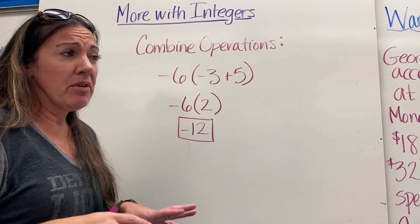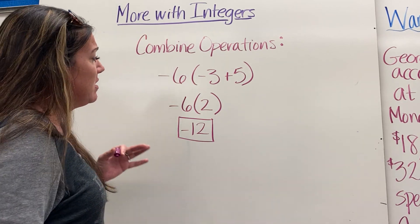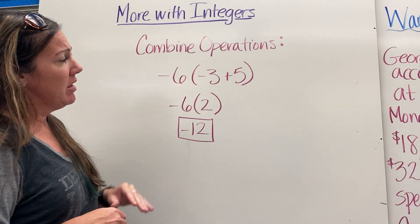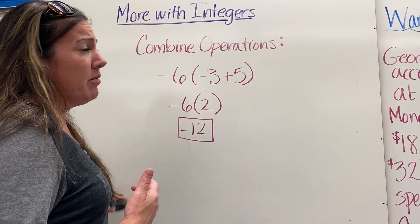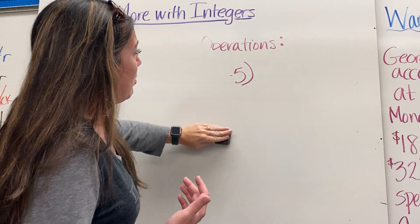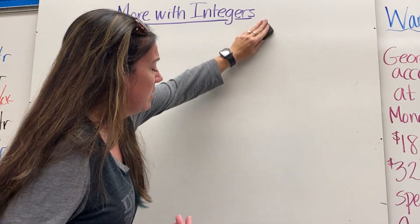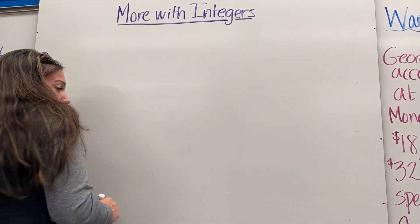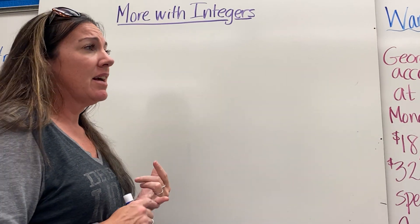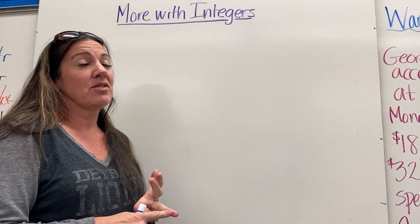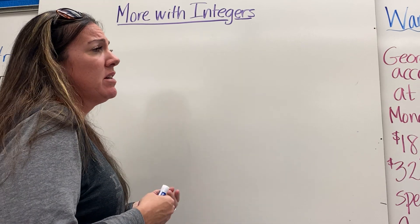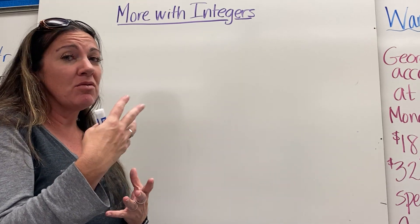Tonight we'll work with a mix of adding, subtracting, multiplying, and dividing, and some combined operations. We're also going to look at applying integers to story problems. Look for key words like 'gained,' 'lost,' 'deposited,' or 'withdrew' to tell you whether a number is increasing or decreasing.